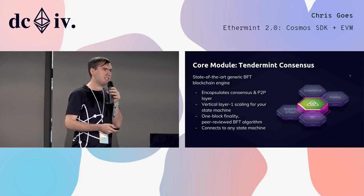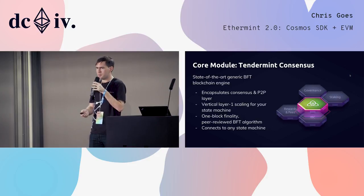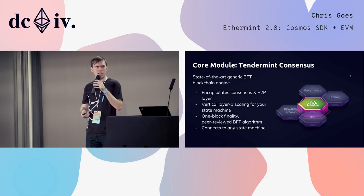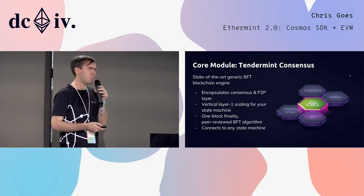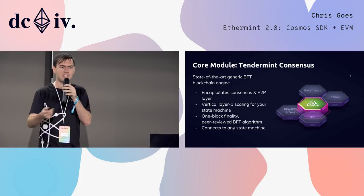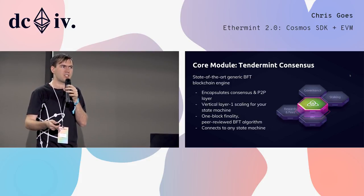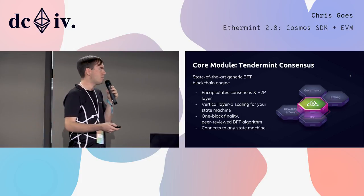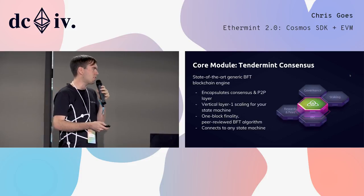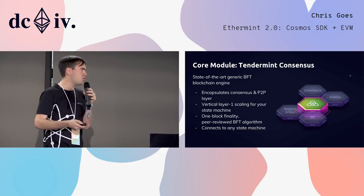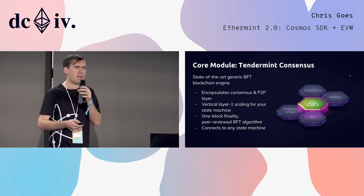In order to facilitate this network of interconnected blockchains, we need a consensus algorithm with particular properties. So we've built Tendermint. Tendermint is the state-of-the-art, generic, Byzantine fault-tolerant blockchain engine. It encapsulates the consensus and peer-to-peer layer, coming to consensus on which transactions ought to be applied in which block, and when a block needs to be appended to the chain. It provides vertical layer-one scaling for your state machine — super-fast, two-and-a-half-second block times. Tendermint is fully peer-reviewed, and it offers one-block finality.